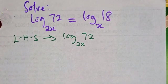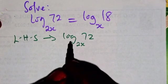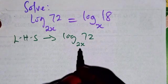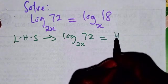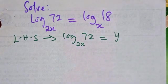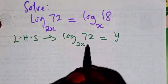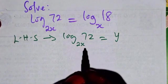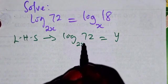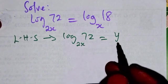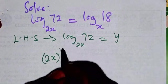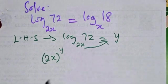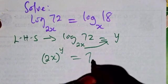From here I will let log base 2x of 72 be a particular variable. Let me call it y. If we transform this to exponential form, the base here, 2x, will be raised to power y. So 2x raised to power y equals 72.